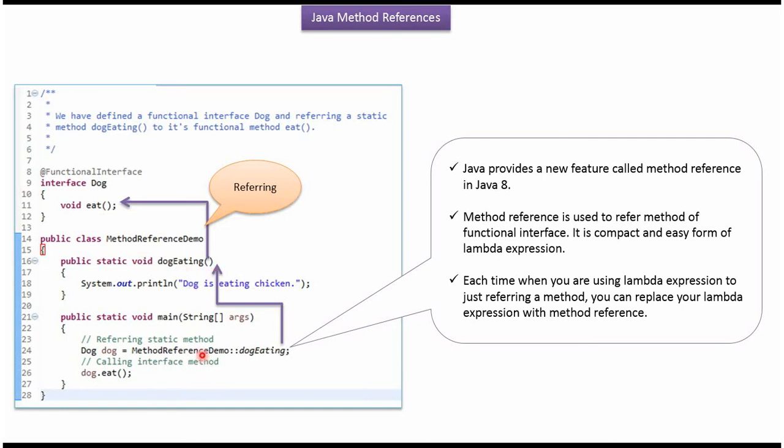Inside the main method, using method reference, what we are doing is we are referring the static method dogEating to the functional method eat.